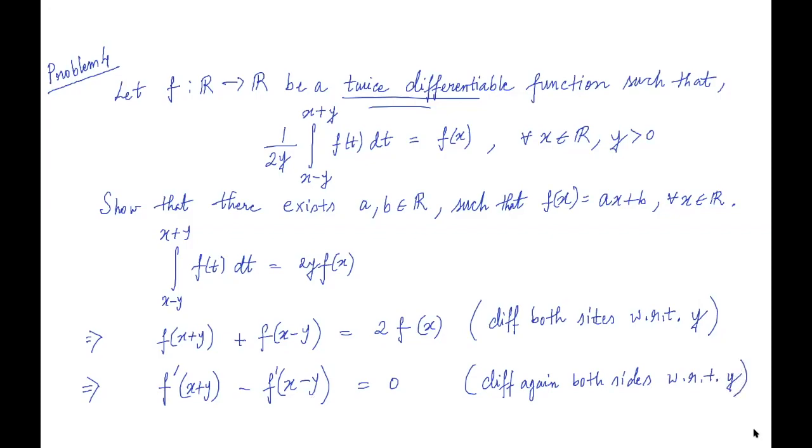So now you see that we have got a very beautiful relation that is f dash x plus y equals f dash x minus y. And this happens for all x in R and y greater than 0. So to show that f is a linear function, if we can show that f double dash x equals 0 then we are done.